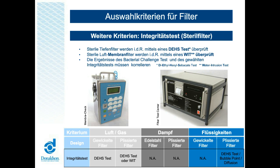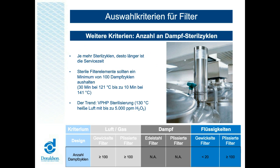Der nächste Punkt ist die Anzahl an Dampfsterilzyklen. Als Faustregel gilt: Je mehr Sterilzyklen ein Filter aushält, desto länger die Servicezeit und desto geringer die laufenden Kosten. Als Maßstab gilt, dass jedes Filterelement — egal ob im Luftgas- oder Flüssigbereich — ein Minimum von 100 Dampfzyklen aushalten sollte: entweder 30 Minuten bei 121 Grad Celsius oder 10 Minuten bei 141 Grad Celsius. Bei gewickelten Filtern im Flüssigbereich liegt die maximale Anzahl an Sterilzyklen im Allgemeinen bedeutend niedriger, im Bereich von 10 bis 20 Zyklen.